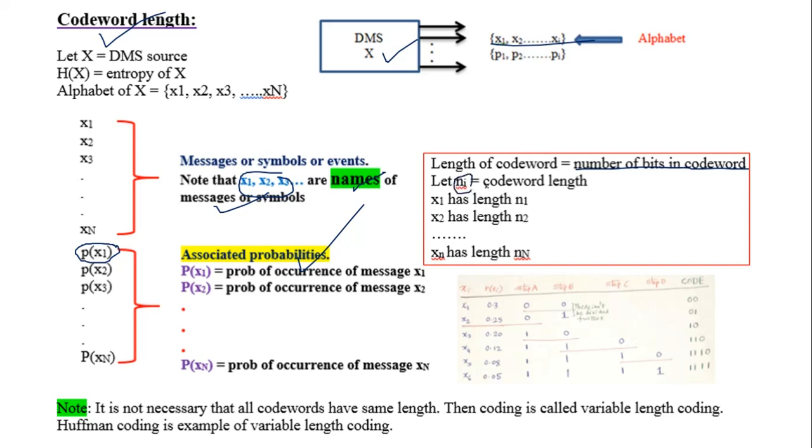We represent codeword length with Ni. Message X1 has N1 bits, X2 has N2 bits, and so on. In this coding example, X1 has length 2 bits, X4 has 4 bits, and X6 has 4 bits. Not all codewords have the same length. This is called variable length coding.